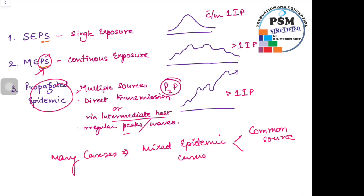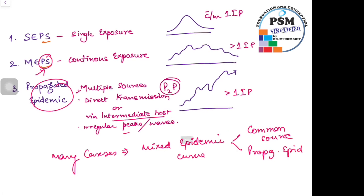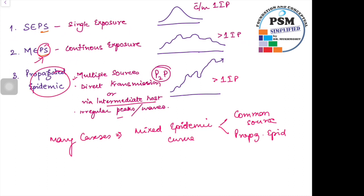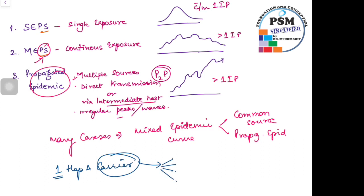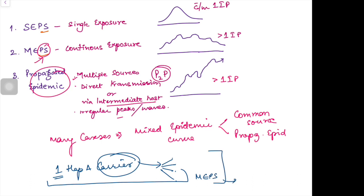A common sense example: suppose there is one person with Hepatitis A in the carrier stage. Introduce this person into a community — they may infect five or six people. Given the incubation period of Hepatitis A, which is in terms of weeks or months, this may initially show a MEPS-type epidemic, followed over many months — maybe half a year — by a propagated epidemic.